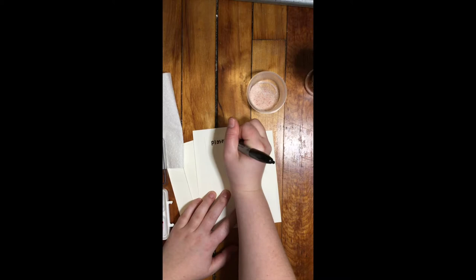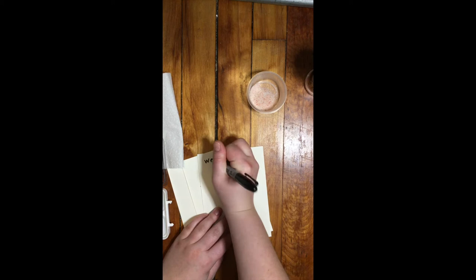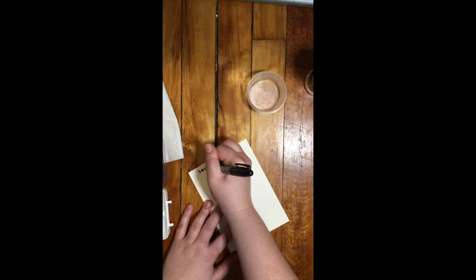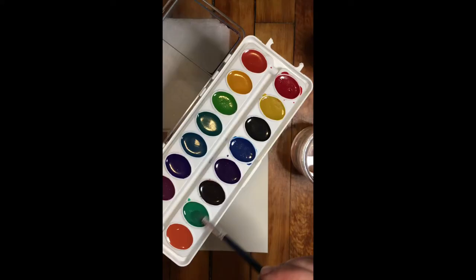So I'm writing on each of my papers the techniques that we're doing. First one, I wrote plastic wrap and then I continued writing them wet on wet, wet on dry, and salt. You can do this on one side of your paper with a pencil. I'm doing it with markers so that you can see it. So label the four techniques on the four pieces of paper.